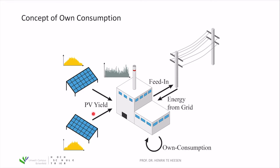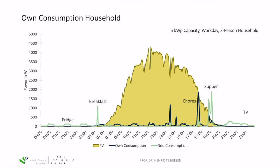First, the PV energy is used, and only second is energy from the grid consumed, because today PV yield is cheaper than energy from the grid. That makes own consumption very interesting for residential and commercial users.